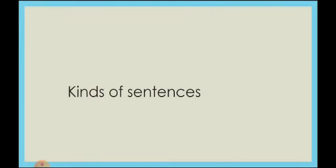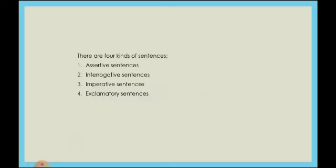Now here are some kinds of sentences. There are four kinds of sentences: the first one is assertive sentence, the second is interrogative sentence, the third is imperative sentence, and the fourth one is exclamatory sentence.